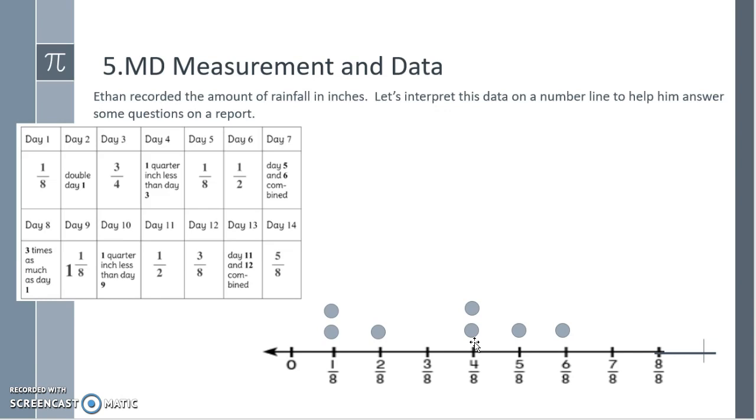I know that one half is the same as four eighths plus one eighth gives me five eighths. Day eight is three times as much as day one, so three copies of one eighth is three eighths. We need one and one eighth for day nine, so we need to go to nine eighths. Day ten is a quarter inch less than day nine, so I need to take two jumps to get to a quarter inch less, at seven eighths.